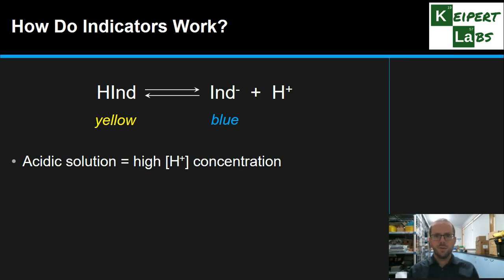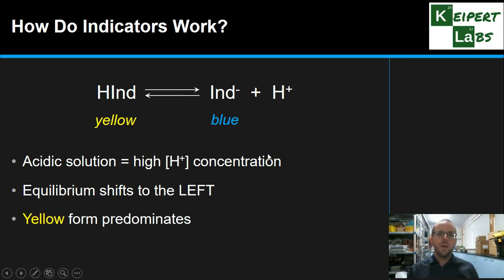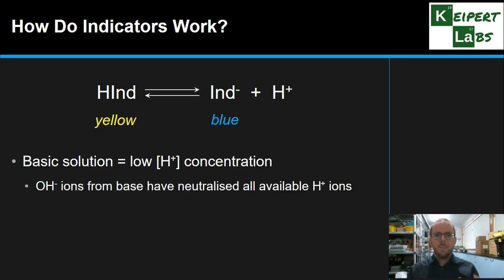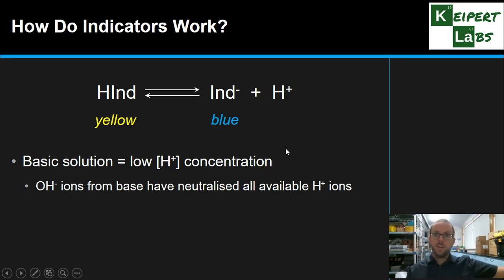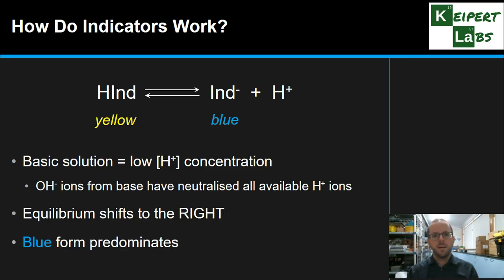In an acidic solution, there's a high concentration of hydrogen ions. Because those levels are high, we shift the equilibrium to the left-hand side to use them up — the hydrogen ions connect with the available blue version to form the yellow version. So the yellow form predominates in an acidic solution. In a basic solution, we have a low concentration of H+ because hydroxide ions from the base react with and neutralise these ions to form water, stripping them out of the system. By Le Châtelier's principle, the equilibrium shifts to the right to replace them, and the blue form predominates when the solution is basic.